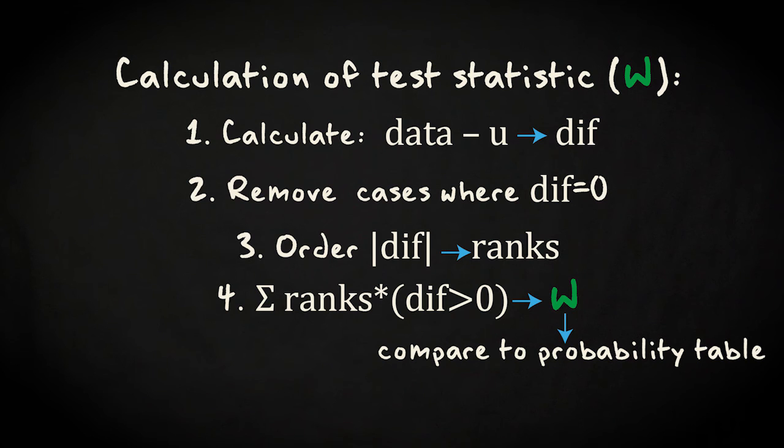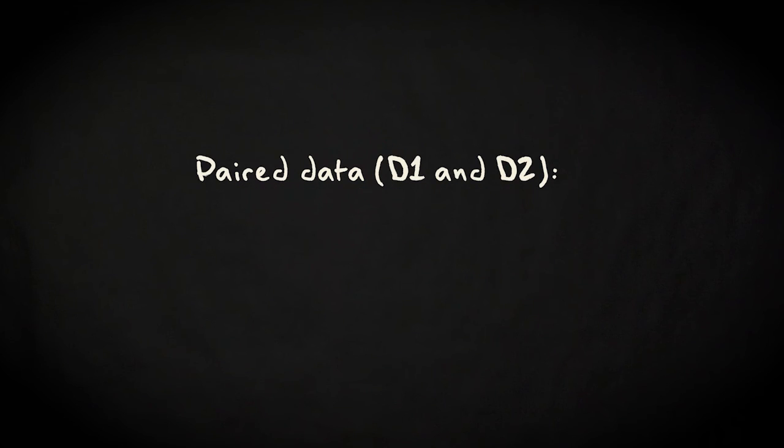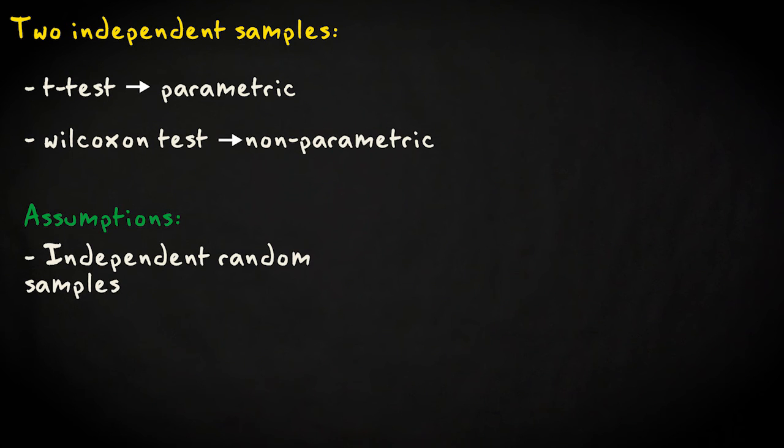A special case occurs when you have paired data. In that case, the data values per pair are subtracted and then treated as a one-sample test against a median of zero.